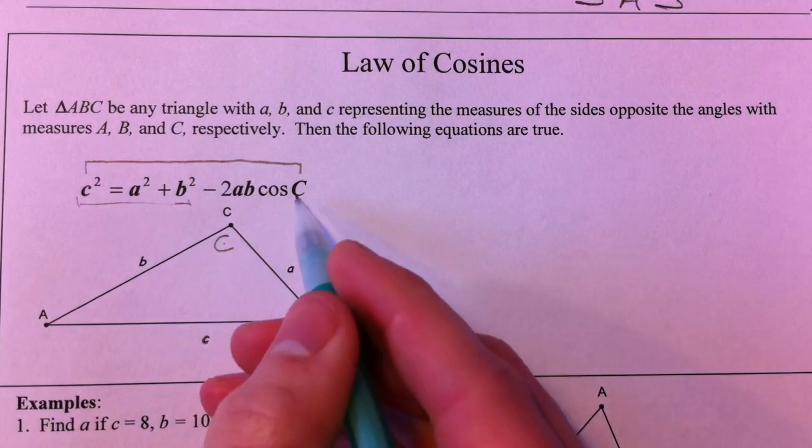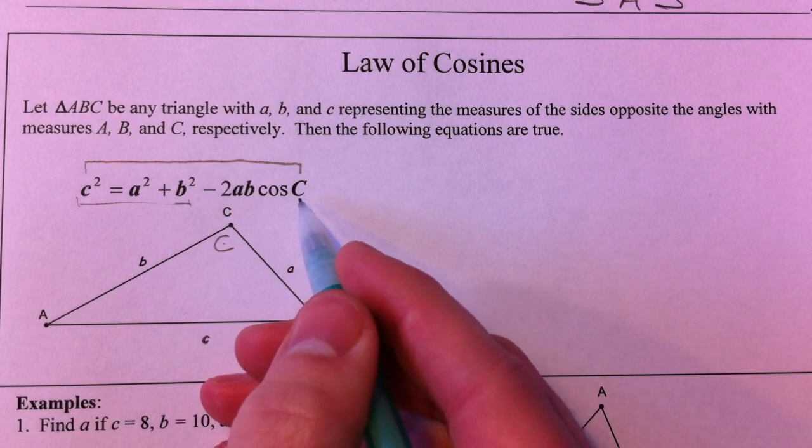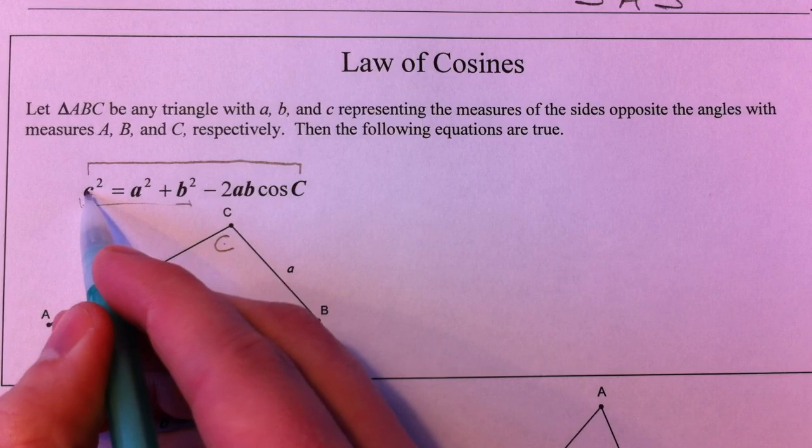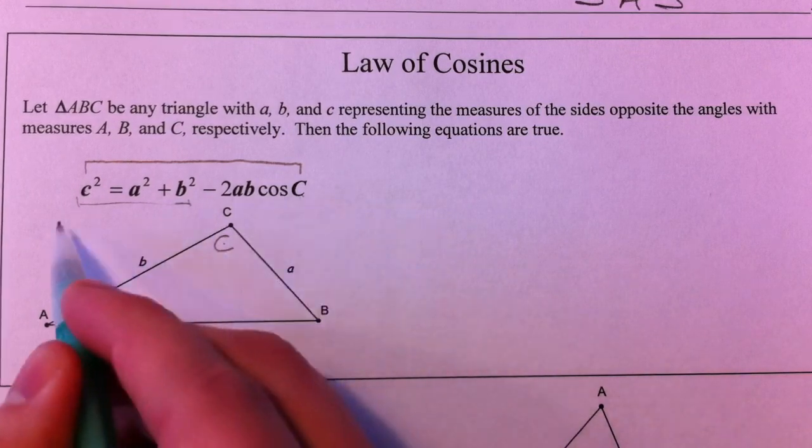Not all your triangles are going to have angle C that you're given. And so it's important to realize that this side, this angle, are opposite.